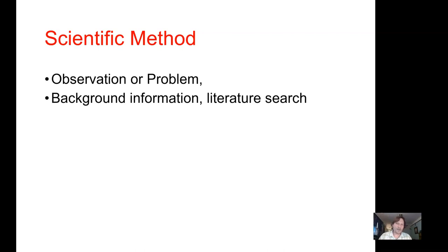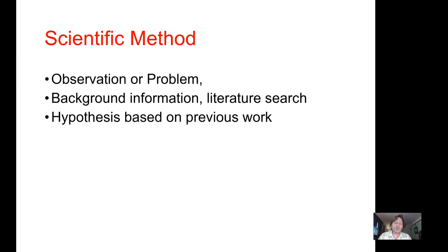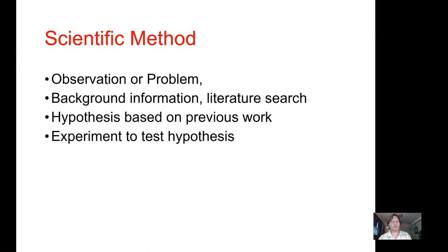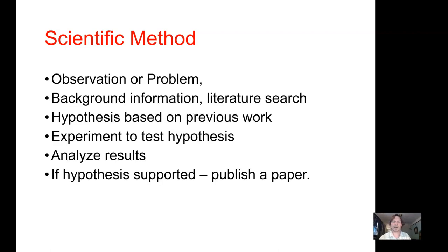After making an observation, you gather information about the system you're studying. With that background, you make what we call a hypothesis — an educated guess. 'Educated' doesn't mean you need a PhD; it means you know enough about the system to make a reasonable guess based on prior work. Then in science, we set up an experiment to test it, collect data, and analyze what happened versus what we predicted.